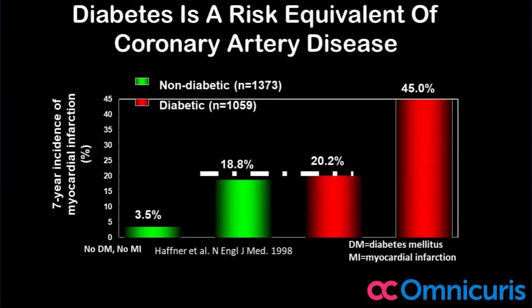This is a famous study by Stephen Hafner, published in the New England Journal of Medicine, showing that diabetes is a risk equivalent of coronary artery disease. What does it mean? Suppose you have a non-diabetic with an MI —